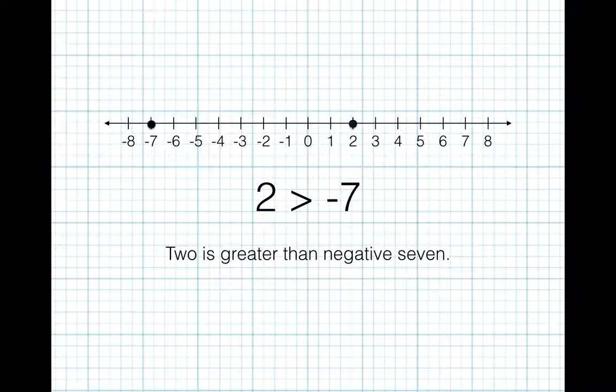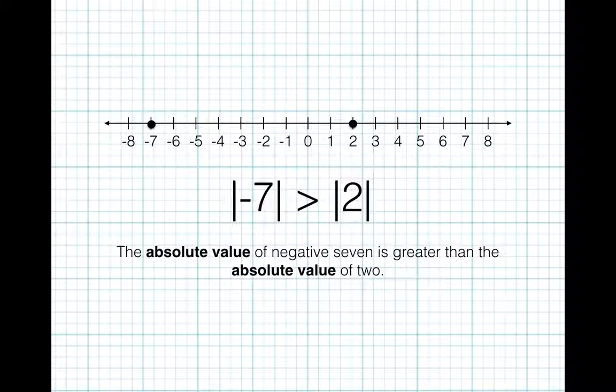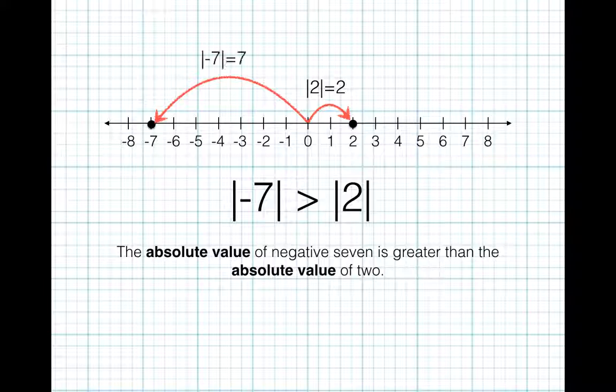Well, 2 is greater than negative 7 since it's farther to the right on the number line. But the absolute value of negative 7 is greater than the absolute value of 2. Let's take a closer look. 2 is 2 units away from 0, so we say it has an absolute value of 2. Negative 7, on the other hand, is 7 units away from 0, so it has an absolute value of 7. Since 7 is greater than 2, the absolute value of negative 7 is greater than the absolute value of 2.